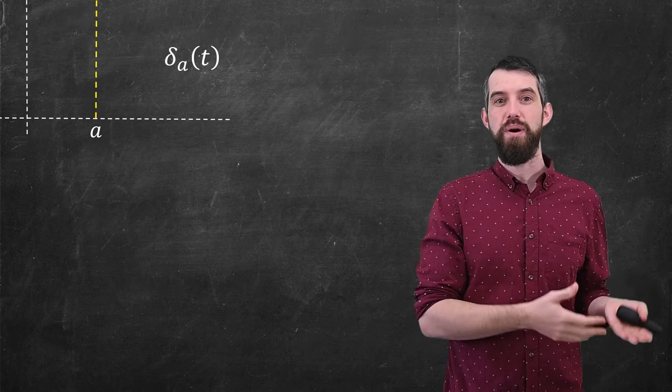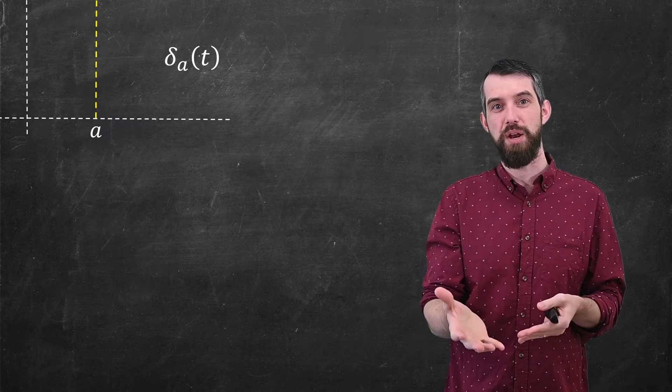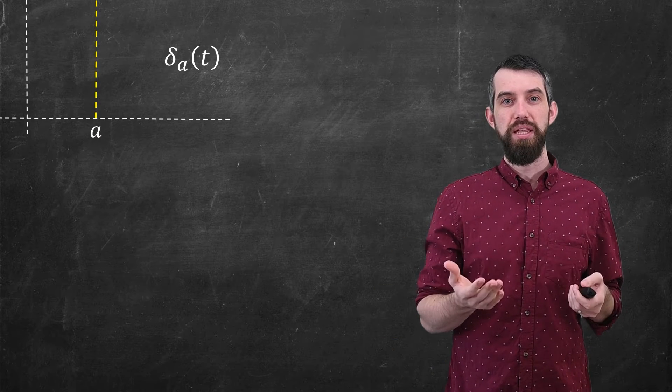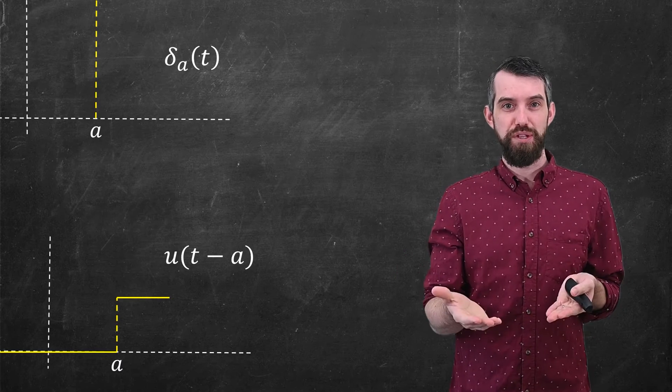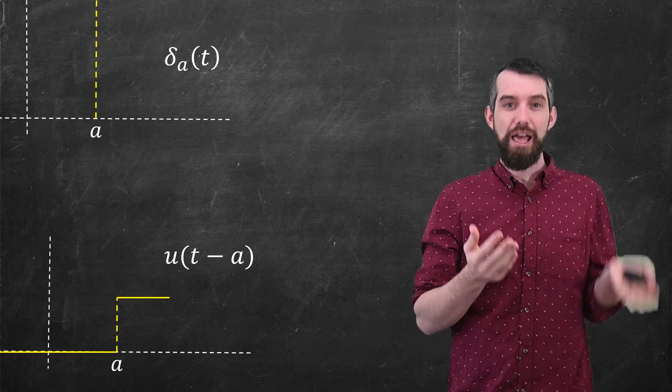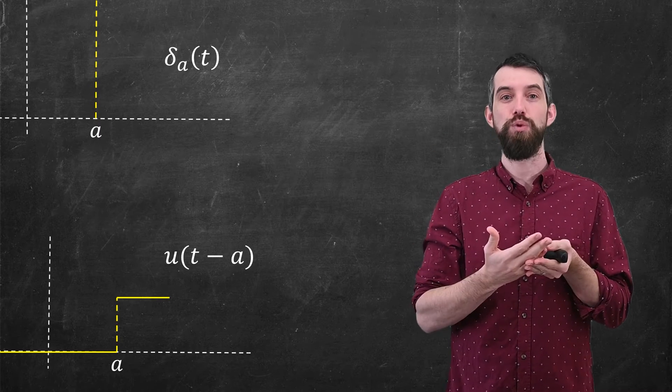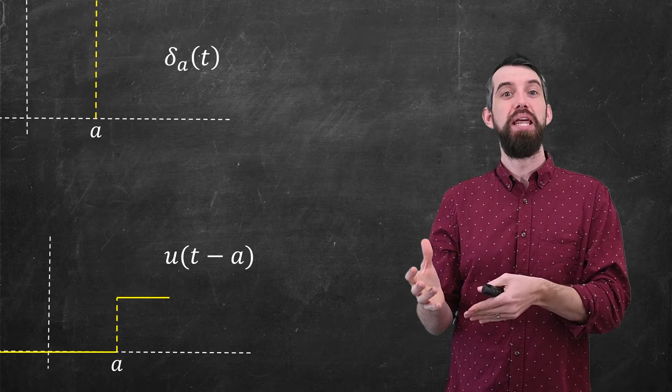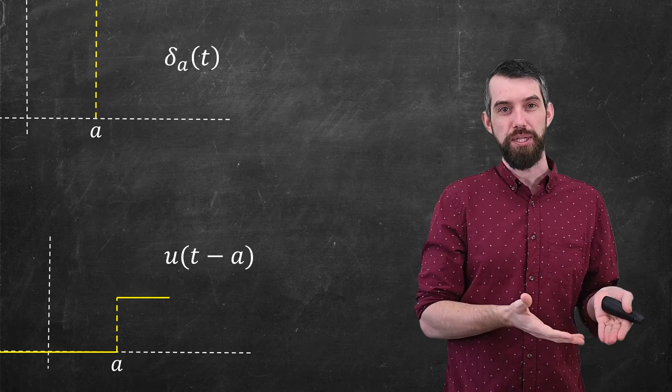The final thing I want to talk about is the relationship between this delta or impulse function that we've been talking about and a function that we've seen previously in our series on the Laplace transform. Namely, we've seen before step functions. So the way the step function was defined was that it was 0 to the left of a and then it jumped up to be the value of 1 at the value of a and was 1 from then on. And indeed, we've seen that this step function played an important role in our study of the Laplace transforms to solve differential equations.